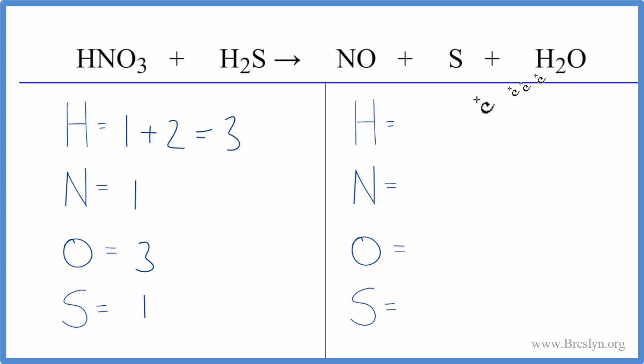On the product side, we have the two hydrogens, one nitrogen, one oxygen, plus the one here, so we have two oxygens, and then one sulfur.